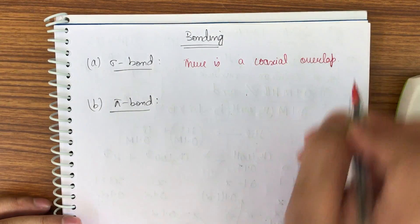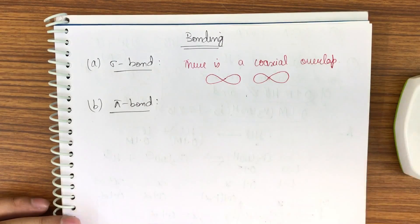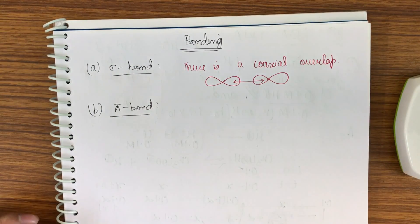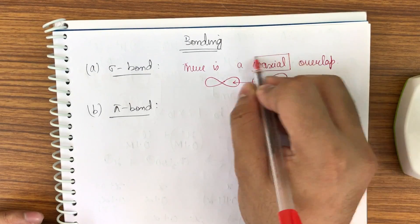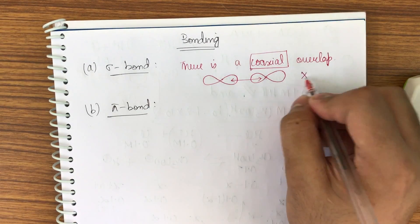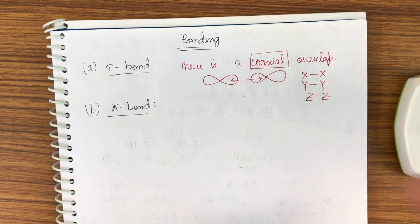Coaxial overlap means these two have to be formed along the same line, for example xx, yy, or zz. In the next two minutes you will know the clarity.